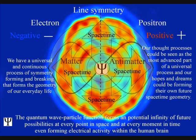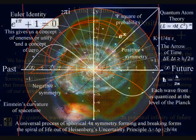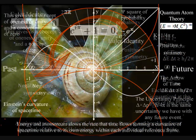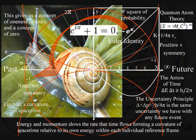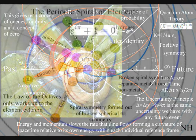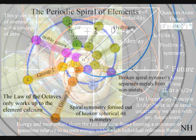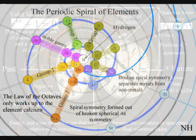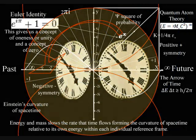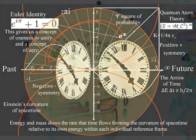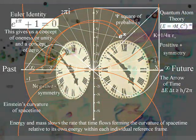This process is totally universal and interactive. From the largest object to the smallest creature, right down to the smallest element of the periodic table, everything will slow the rate that time flows, forming a curvature of space-time relative to its own energy or mass.